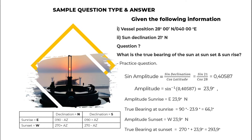Next sample question: You are given the following information — vessel position latitude 28° 00' North, longitude 040° 00' East, and sun declination 21° North. Question: What is the true bearing of the sun at sunset and sunrise? Remember, sine amplitude equals sine declination divided by cosine latitude. So sine 21° divided by cosine 28° gives us 0.40587.